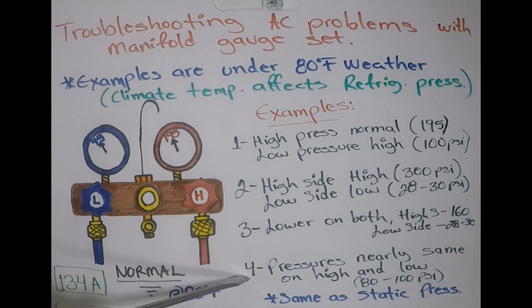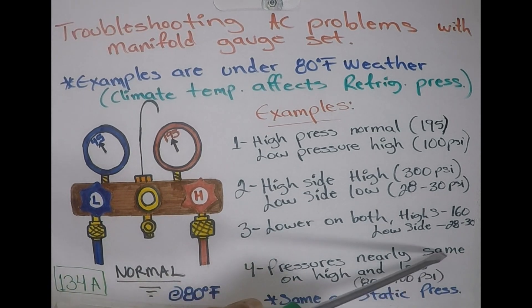Now let's go over example number four. The pressures are nearly the same on the high side and the low side, anywhere from 80 to 100 PSI, which is pretty much what the static pressure would be. At that point, you have a faulty compressor that is unable to build up pressure, and it needs to be replaced.